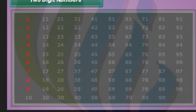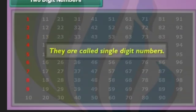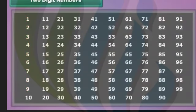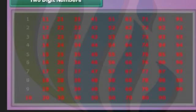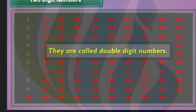The numbers from one to nine have only one digit each. Therefore, they are called single-digit numbers. The numbers from ten to ninety-nine have two digits each. Therefore, they are called two-digit or double-digit numbers.